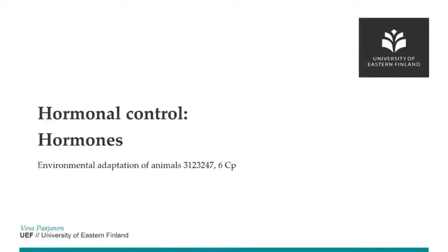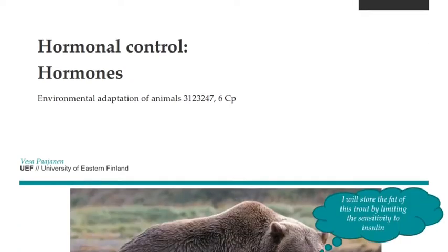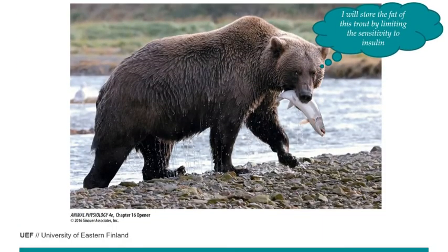Welcome to the lecture on inward adaptation of animals. We will start on the hormonal control of body functions, which will lead us step by step through annual and seasonal changes — for example, in the reproduction of animals. But let's start on the hormones. We have a grizzly bear as an example.